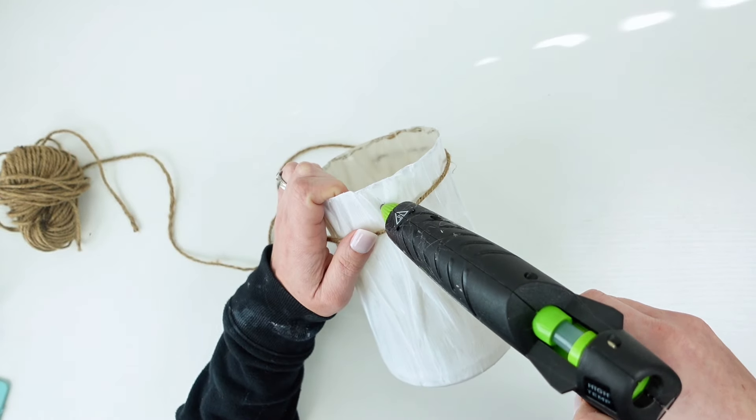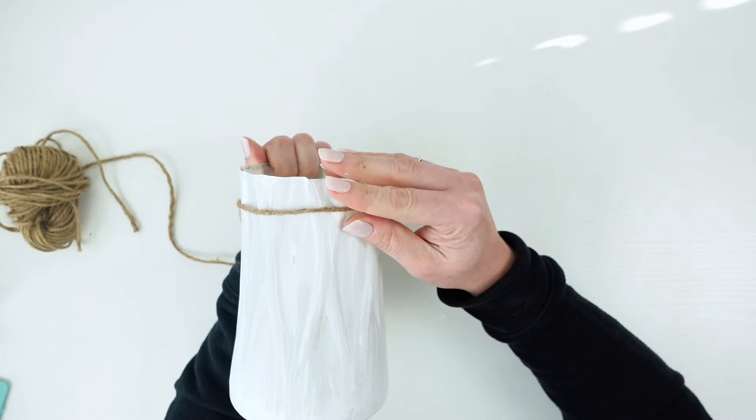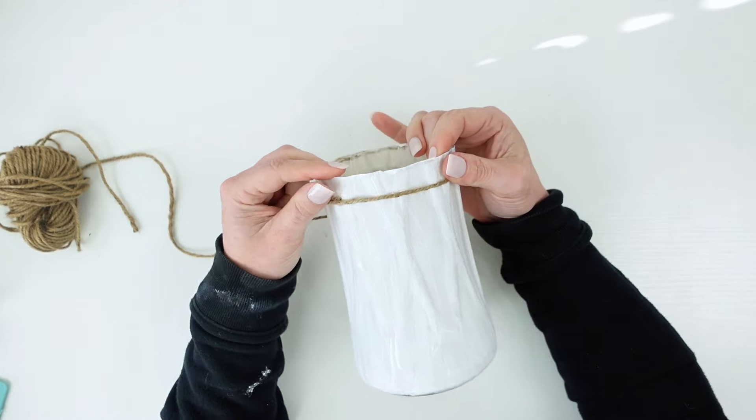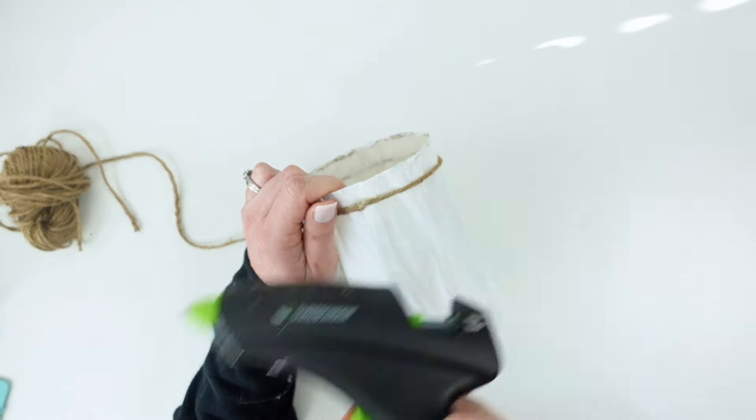And you can obviously make this as thick or thin as you want. You can use ribbon, but I really like the way the twine looks. It's kind of like a farmhouse vibe. And so I just worked my way around all the way to the top with my hot glue and my twine.